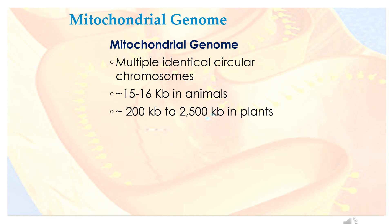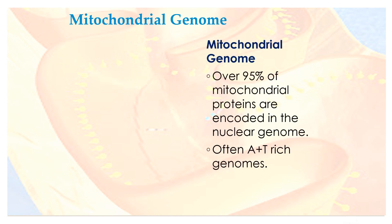The mitochondrial genome consists of multiple identical circular chromosomes — approximately 15 to 16 KB in animals and 200 KB to 2,500 KB in plants. Over 95% of mitochondrial proteins are encoded in the nuclear genome. Mitochondrial genomes are often AT-rich genomes.